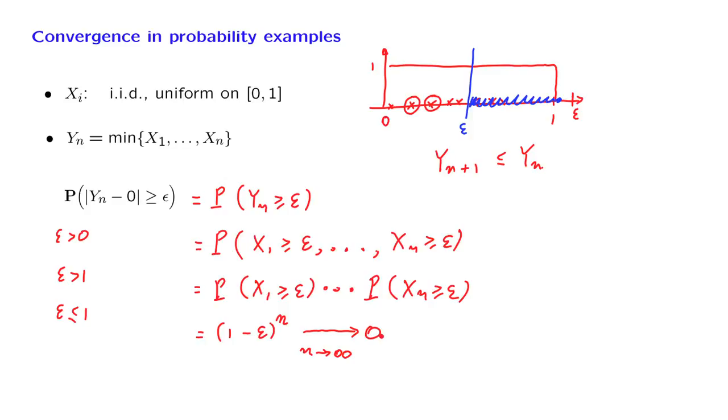Since this is the case for any epsilon, we conclude that the random variables Yn converge to 0 in the sense that we have defined in probability.